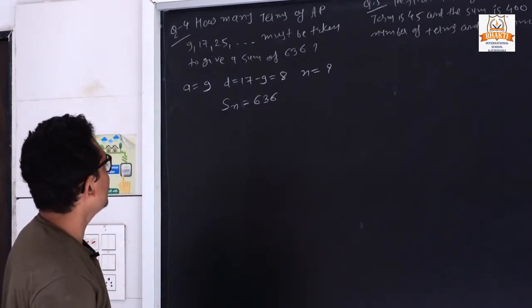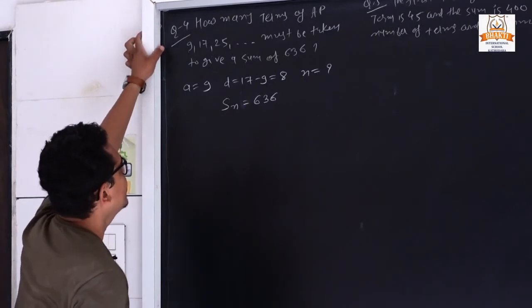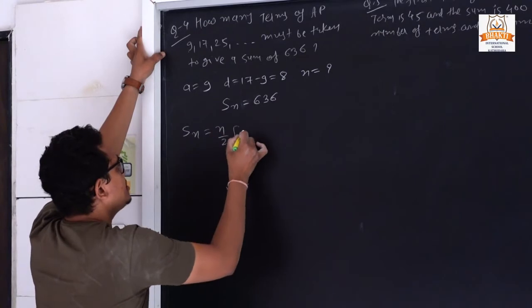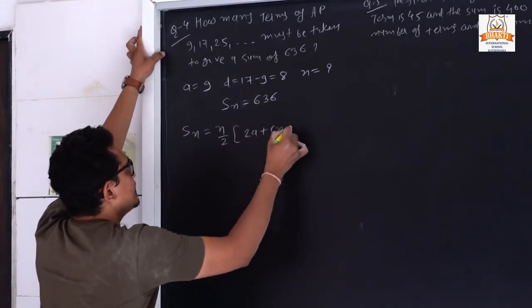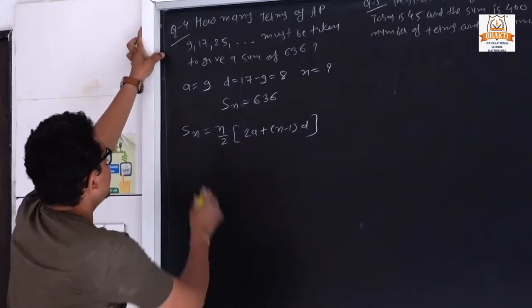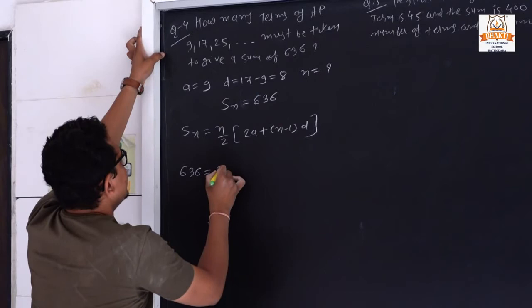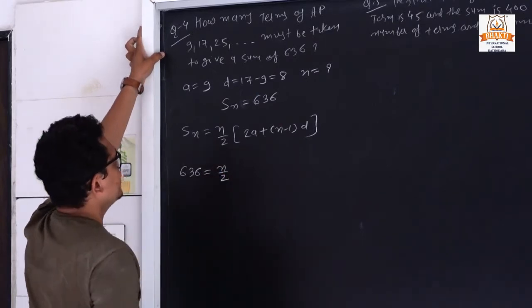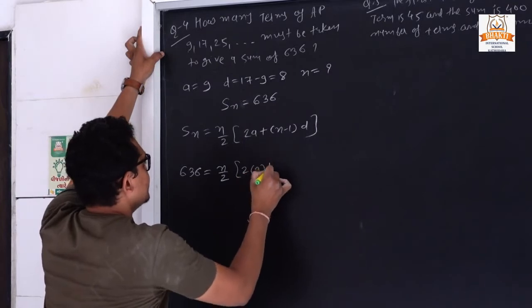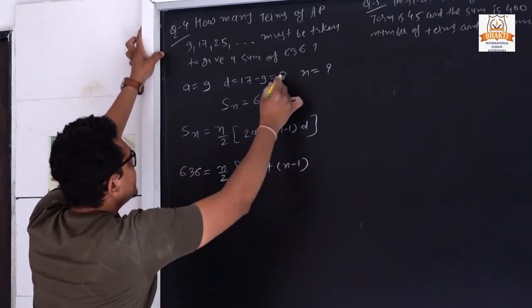We can use the formula Sn = n/2 × (2a + (n−1)×d). Sn is given as 636, n is the unknown term, what is a? First term is 9, n is unknown, and what is d? It is 8.